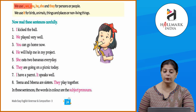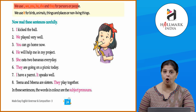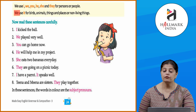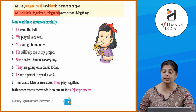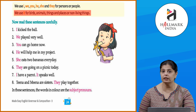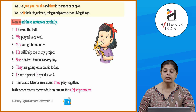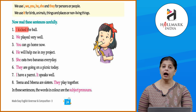We use I, we, you, he, she, and they for persons or people. We use 'it' for birds, animals, things, and places — non-living things. For birds, animals, and non-living things we use 'it.' Now read these sentences carefully.